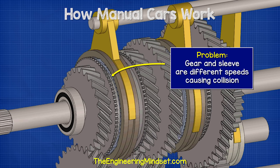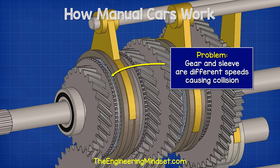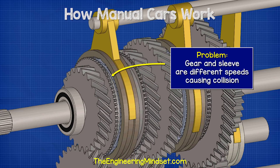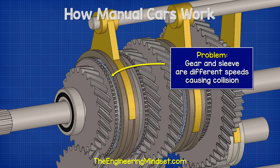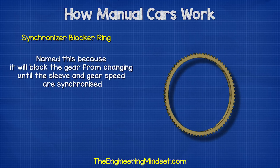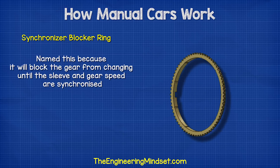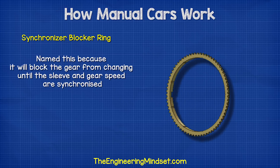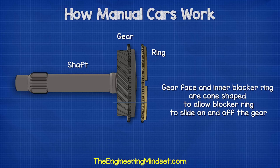The problem we face is that the output shaft and the sleeve are rotating at different speeds to the output gear. So when we engage the sleeve, the teeth are going to collide and grind. To overcome this, we use a synchronizer blocker ring. It's called this because it will prevent or block the gear from changing until the sleeve and the gear speed are synchronized. The inner edge of the blocker ring is angled and matches the cone on the gear.